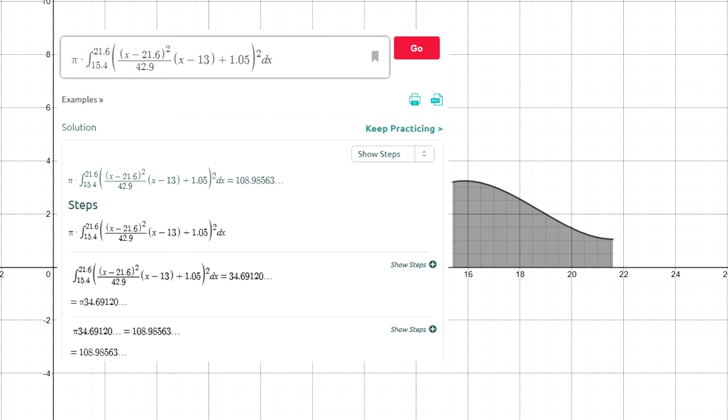This function could be done by hand. However, it's a long and extended process. So, the aid from Symbolab helped us hugely in order to calculate this volume of the section of the bottle.